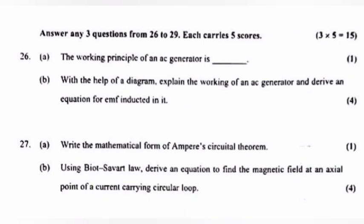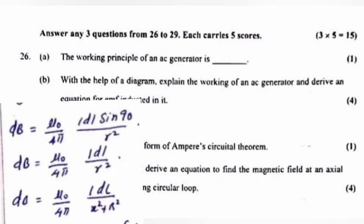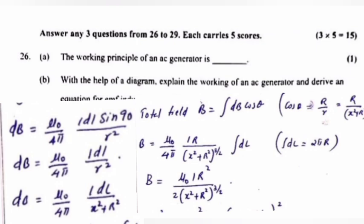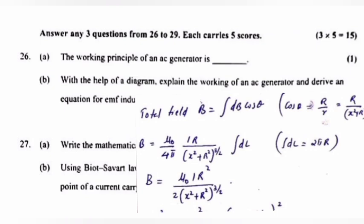Question 27b: Using Biot-Savart's law, derive an equation to find the magnetic field at an axial point of a current-carrying circular loop. Answer: dB = (μ₀/4π) × (I dl sin90°) / r² = (μ₀/4π) × (I dl) / r². Total field B = ∫ dB cos θ = (μ₀/4π) × (IR) / (x² + R²)^(3/2) × ∫ dl.